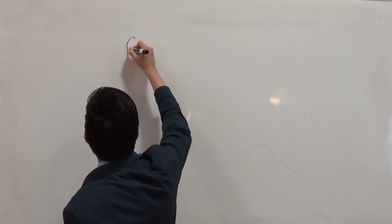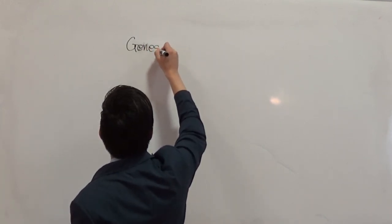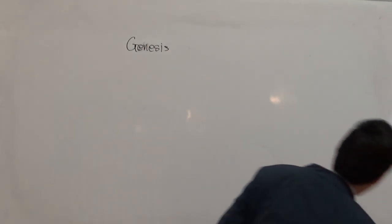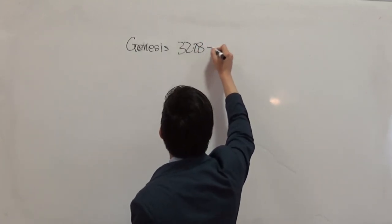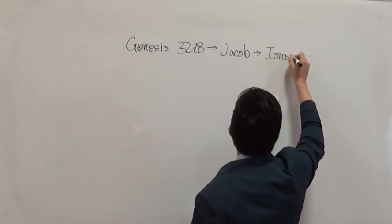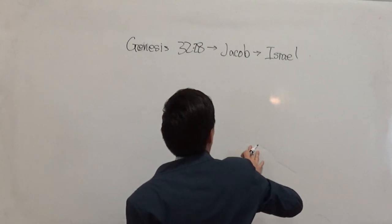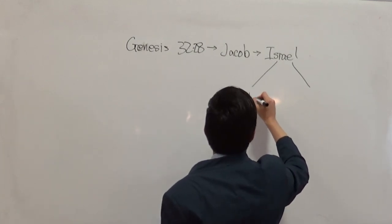In Genesis chapter 32 verse 28, Jacob's name is changed to Israel. That's the key — the nation of Israel comes from Israel. Israelites, or Jews, trace back to Jacob/Israel, and from him came the 12 tribes.